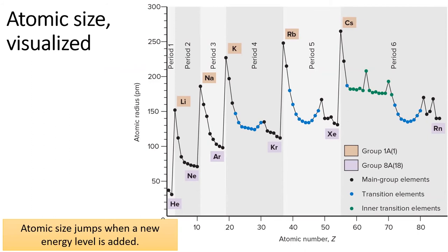If we graph the atomic radius versus atomic number, we see that the atomic radius jumps each time a new energy level is added at the beginning of the period.